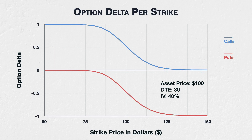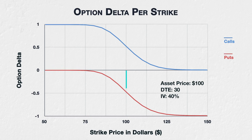We also learned that put options have negative delta, because they decrease in value when the underlying price increases. The put option deltas, in red, are all between 0 and minus 1, with the lower strike puts that are deep out of the money having deltas approaching 0, the at-the-money strike of $100 having a delta of about minus 0.5, and the higher strike puts that are deep in the money having deltas approaching minus 1.